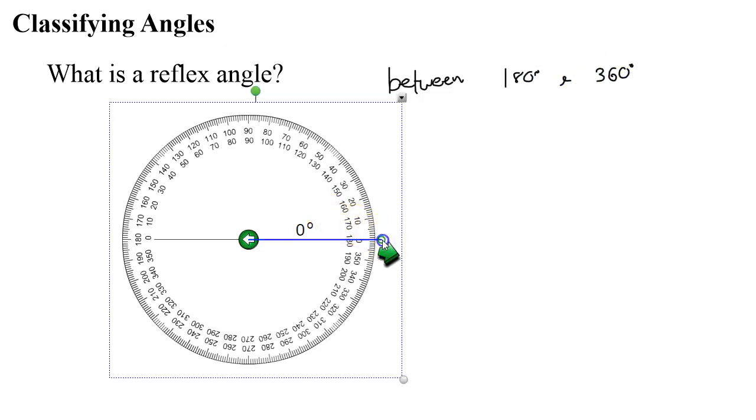So looking at our protractor, getting beyond the 180 mark, it is anything between 180 and 360 in the region we can see here. So an example might be a 220 degree angle.